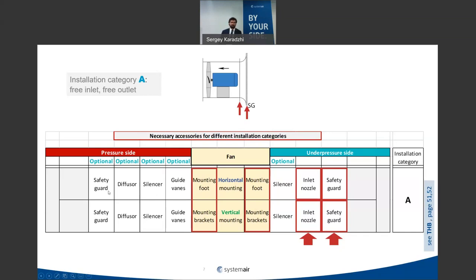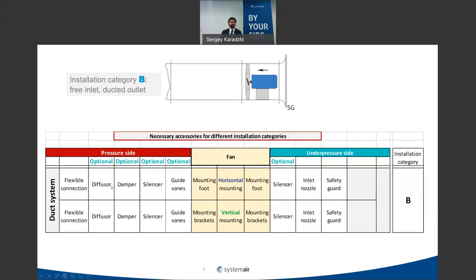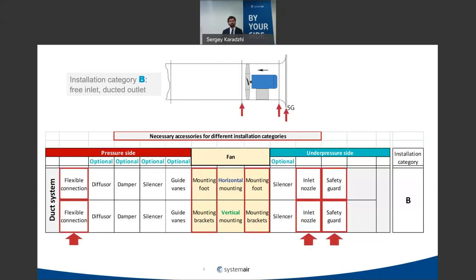For Category B — free inlet, ducted outlet — you also need an inlet nozzle and safety guard to smooth the inlet flow, mounting feet with dampers, and a flexible connection on the outlet. Without the flexible connection, vibrations can spread into the duct system, causing increased mechanical noise.